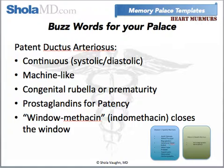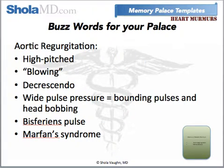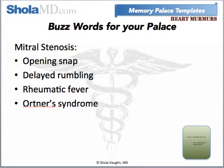The way I remembered indomethacin was 'window-methacin' — like you close the window. And then for aortic regurgitation, now that we've moved into the diastolic murmurs: high-pitched, blowing, decrescendo, wide pulse pressure — which is associated with bounding pulses and head bobbing — also a bisferious pulse and Marfan syndrome. And then for mitral stenosis: there's the opening snap, delayed rumbling, rheumatic fever, and Ortner syndrome.